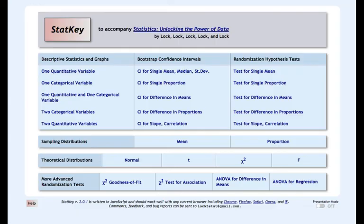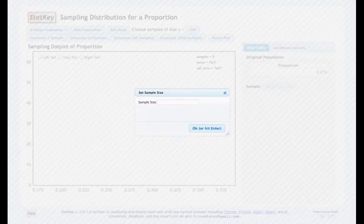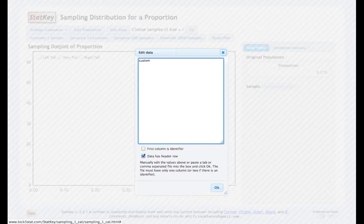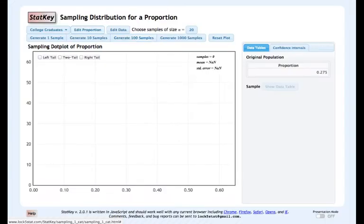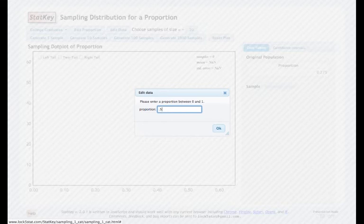In StatKey, sampling distributions for a proportion, I will select n equals 20. I want to make sure that my population proportion is 0.5. So I'll edit my proportion and enter 0.5.